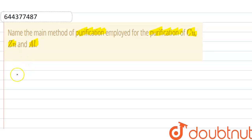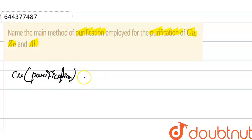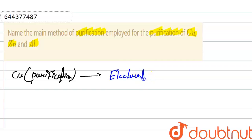First of all, we know that the purification of copper is done by the process of electrolytic refining.